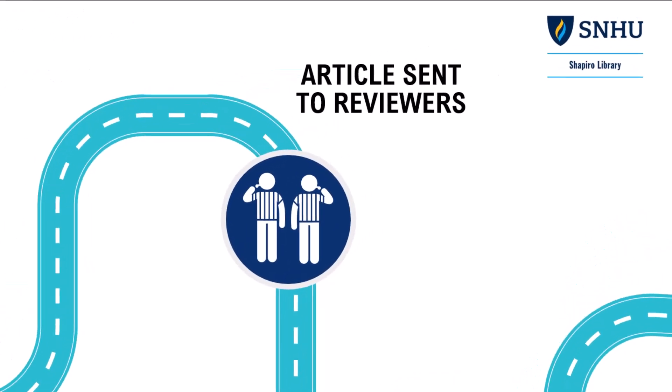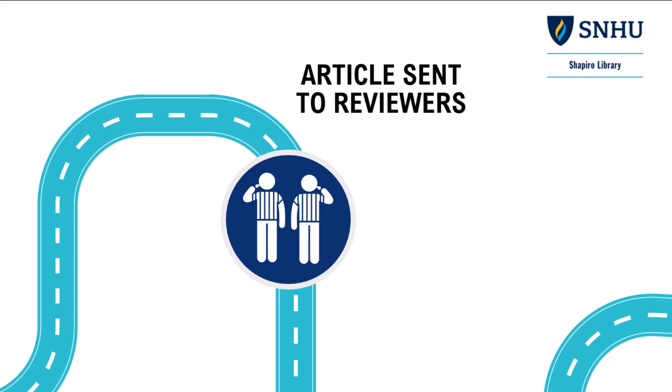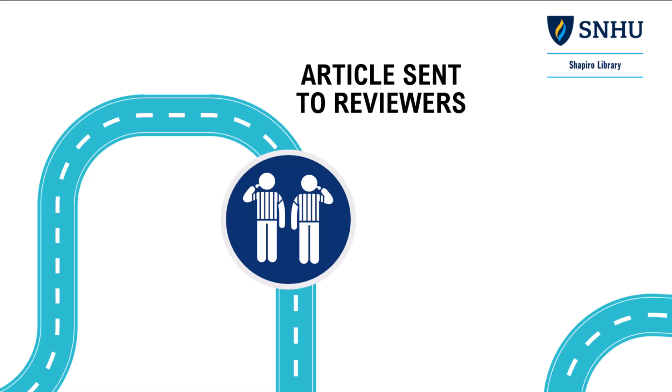This is the article's second and most important test. These experts are the author's peers since they are working in the same research area. And since they are making a judgment about the article, they are sometimes called referees — so peer-reviewed articles are sometimes called refereed articles.